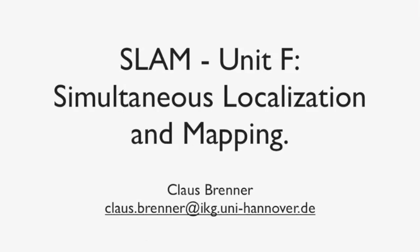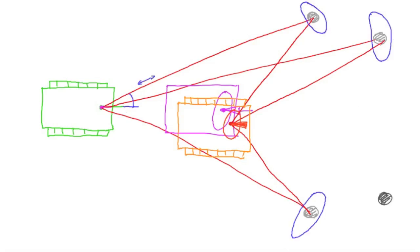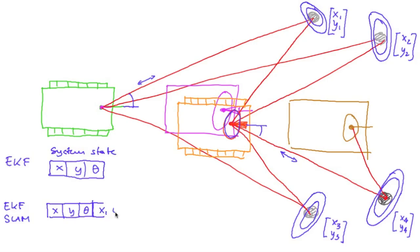In unit F we will start with mapping. Now no map of landmarks will be given in advance, instead the robot will simultaneously localize itself and produce a map. We will first treat this by extended Kalman filter SLAM where the locations of the landmarks become part of the filter state.